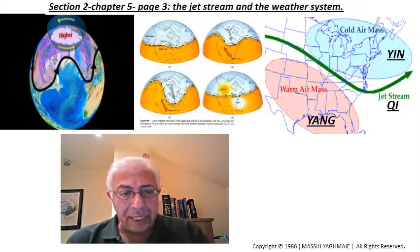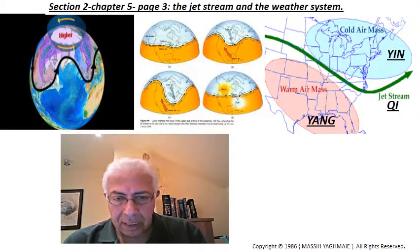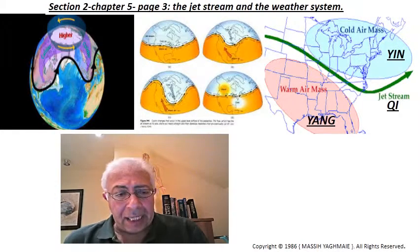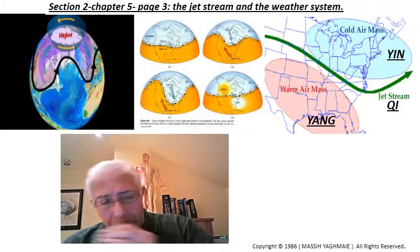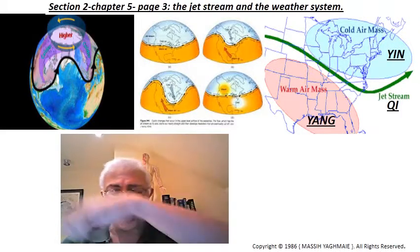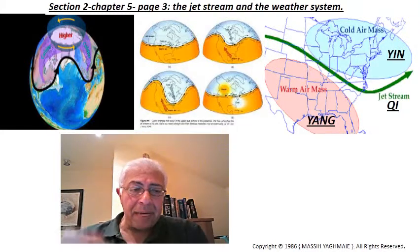Again, the whole weather system depends on the yin and the yang. The main weather system that goes through the whole planet, around the whole planet, is called a jet stream. That mainly is the main one that controls the weather system.